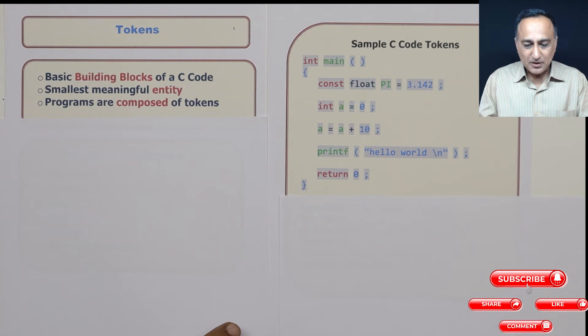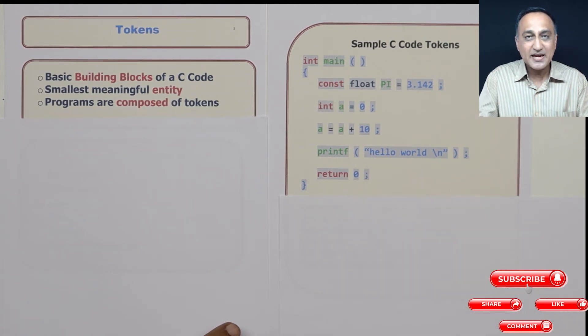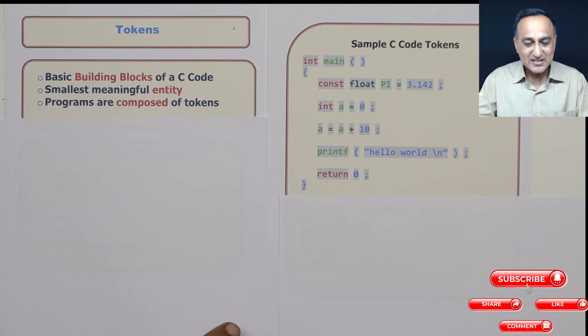After that, the third type of token is something called a string. If you see hello world, it is enclosed between double quotes. Anything which is enclosed in double quotes is known as a string.